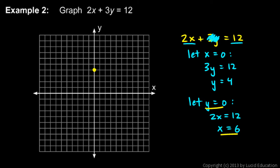So that's another point: x is 6, y is 0. Those x and y values give us another point, x is 6, y is 0, right there.